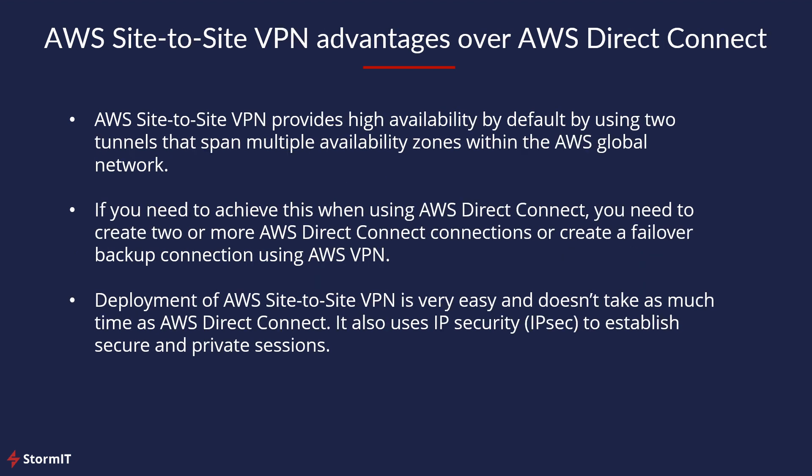What are the advantages of Site-to-Site VPN? It's easier to use. It's highly available because it uses two tunnels — but you have to set it up that way. If you need to achieve high availability with AWS Direct Connect, it will be more difficult — normally you would need to create two AWS Direct Connects to have high availability. And the deployment of AWS Site-to-Site VPN will take a couple of days, so it's much more convenient.